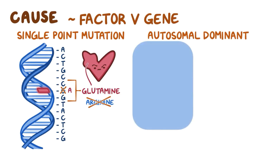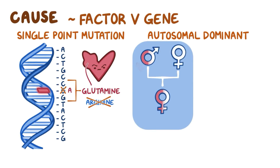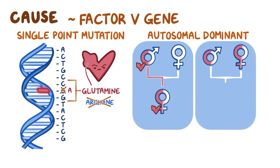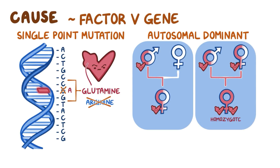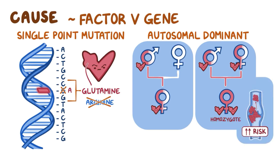A single abnormal copy of the gene, which can be inherited from either parent, is needed to get the disease. If someone has two copies of the factor V Leiden gene, these people are homozygotes and they have a higher risk of developing a venous thromboembolism, which is the most common clinical presentation of factor V Leiden.